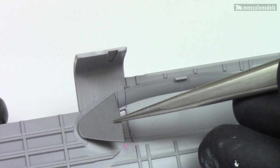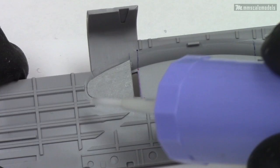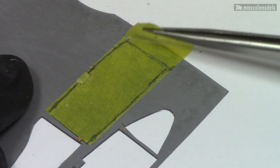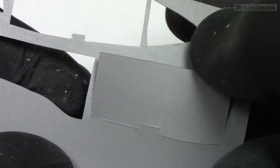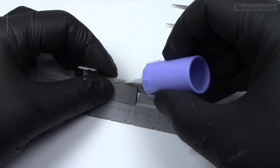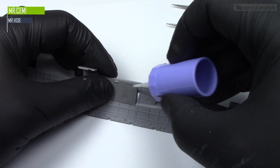After the shape was cut out I glued it in place using Mr. Cement SP. And this process repeated itself until all sections were done. And I did this in sections because I had to leave space for the bulkheads.